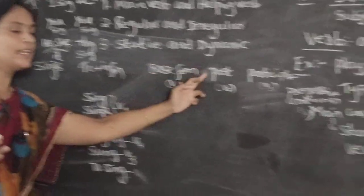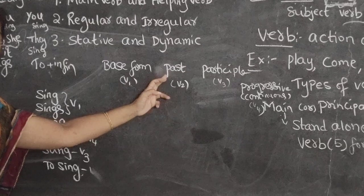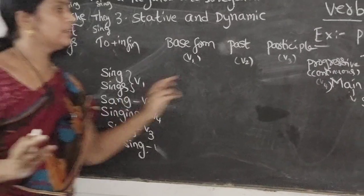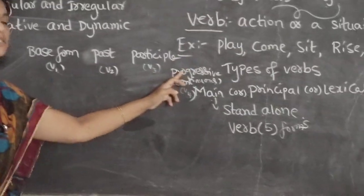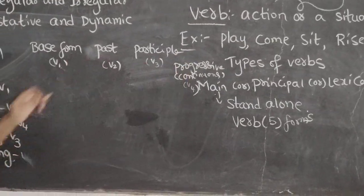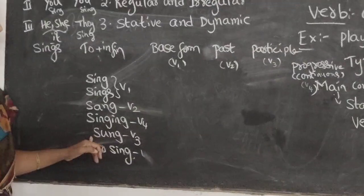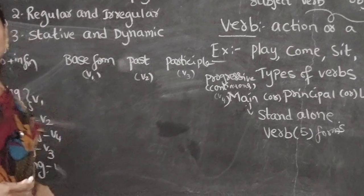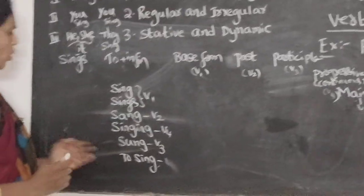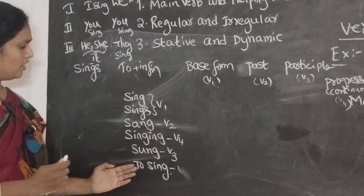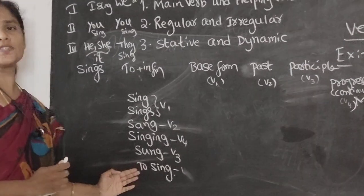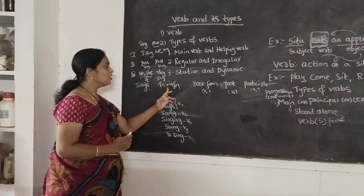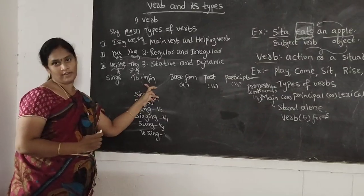Sang — we call this past, V2. Singing — that is progressive or continuous. Sung — participle, V3. And to sing — the to-infinitive. The to-infinitive is used to tell the purpose.